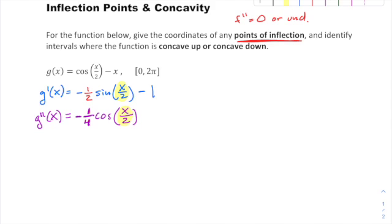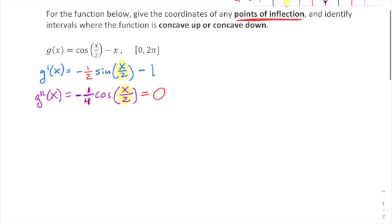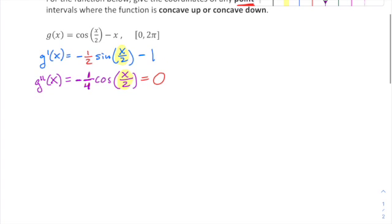And so where is this second derivative zero or undefined? Well, it's cosine, so hopefully you're thinking, where is it undefined? It's never undefined. Sine and cosine are always defined, so we don't have to worry about the undefined piece in this problem. But where is this equal to zero? That's certainly going to have some solutions. Whether or not they occur in this interval, that's a different story. So setting this function equal to zero, the coefficient of negative one fourth, you can divide by that, and that goes away. So you're really focusing on where does cosine of x over 2 equal zero.